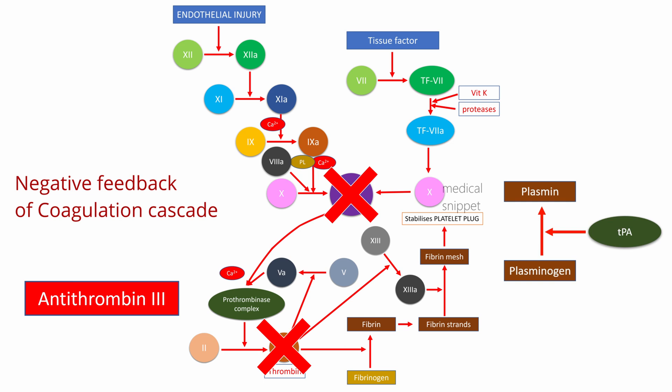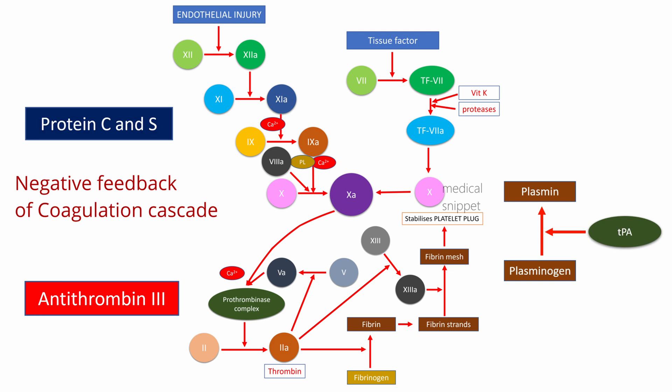Antithrombin also inactivates factor IXa to a lesser extent. The third negative feedback mechanism is by protein C along with the cofactor protein S. The activated protein C, along with protein S, inhibits factor Va and factor VIIIa, thus inhibiting coagulation. Protein C and S are mainly secreted in the liver and they are vitamin K dependent.